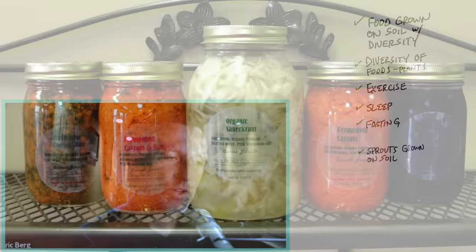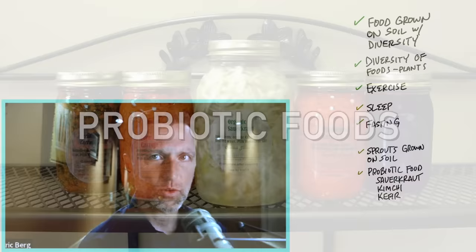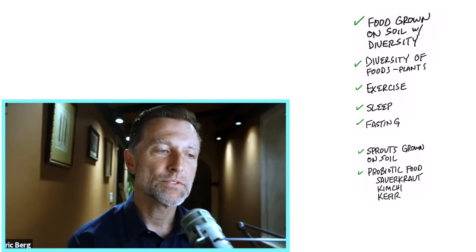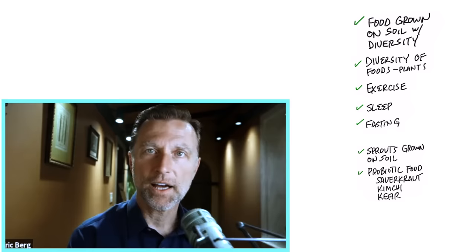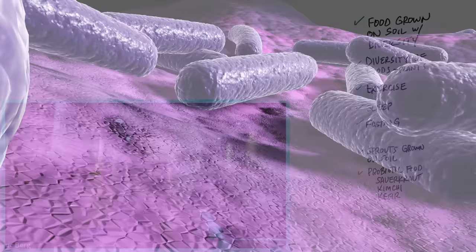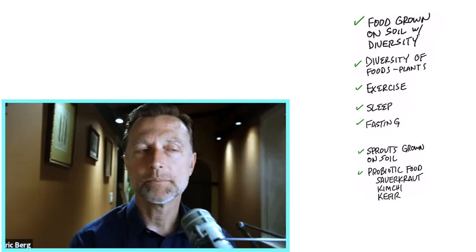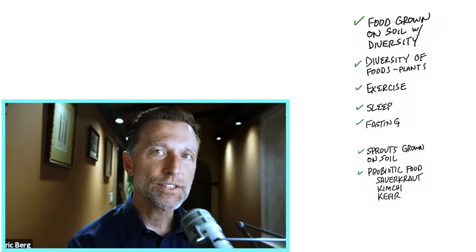Probiotic foods — kefir, sauerkraut — are essential. They have such a wide range of different microbes. The diversity of microbes in sauerkraut, kimchi, and kefir is really significant. When you eat those diversified foods, you get the benefit of that. For example, certain lactobacillus microbes help you make dopamine, which can help support and even potentially prevent ADHD, depression, anxiety, and many other similar disorders.